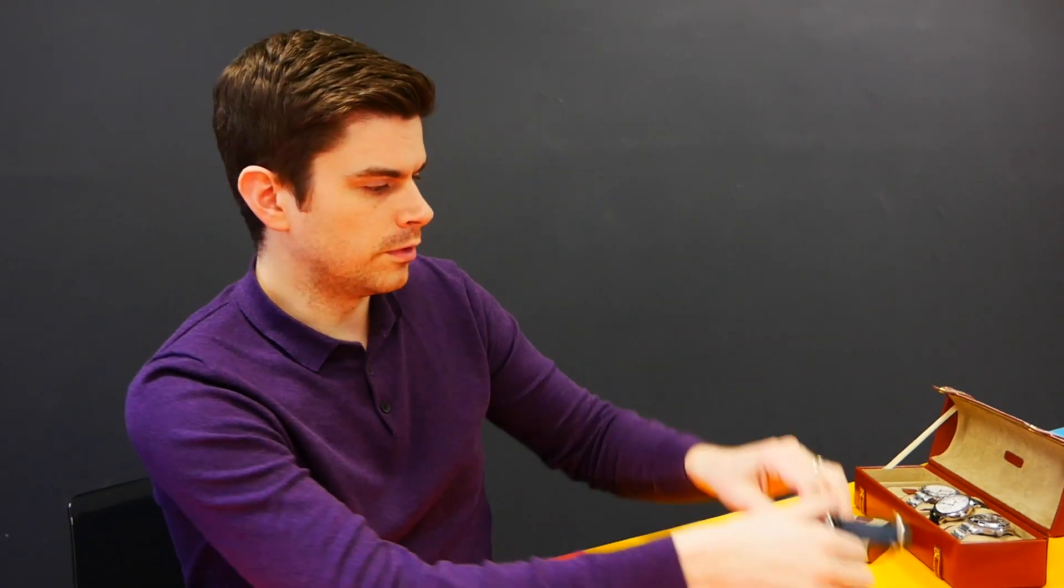So specs include a 41mm diameter, so quite a reasonable size, 13.9mm height, 47.8mm lug to lug length. You also have a ETA 2824-2 movement in the Essence as well. Price for this, obviously a Swiss made, £710. So that's number four.